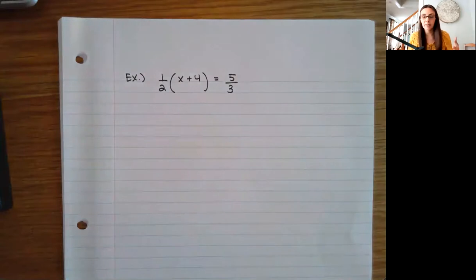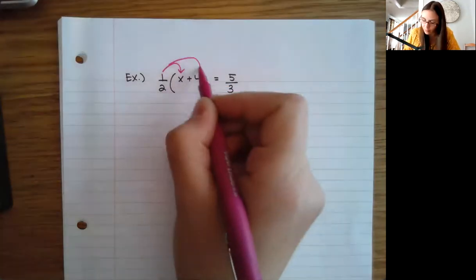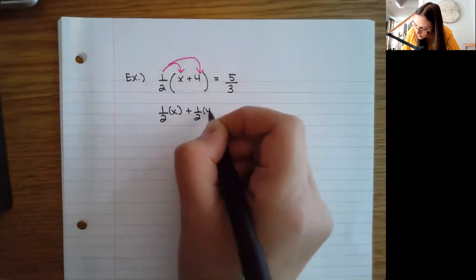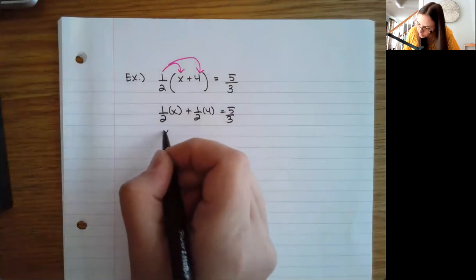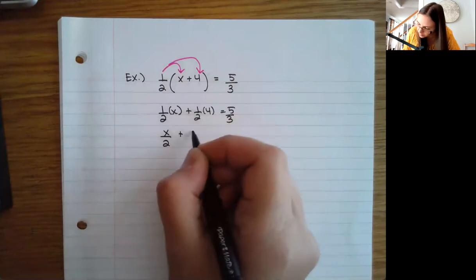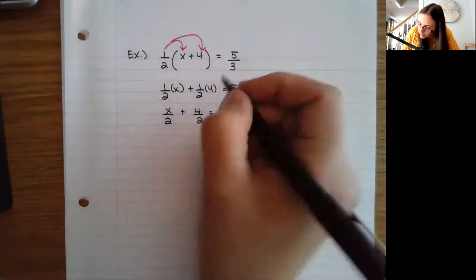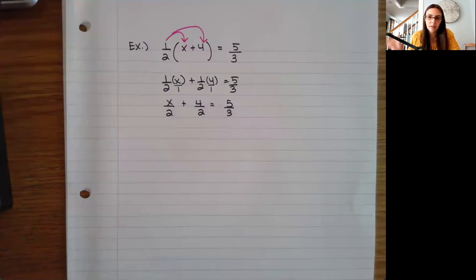Here I have fractions and parentheses. When we had parentheses before, we always cleared those out first, and I still recommend doing the same thing. So I'm going to multiply that one half through first: one half times x plus one half times four equals five thirds. This gives me x/2 plus four over two equals five thirds. I can simplify four over two to two, but I'm going to cancel the fractions anyway.